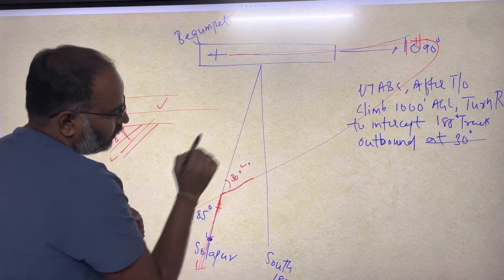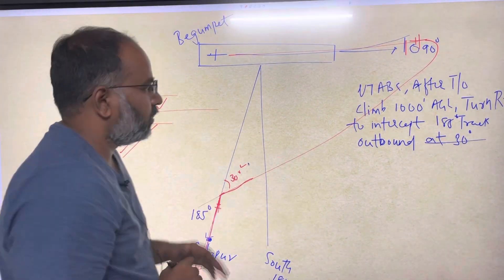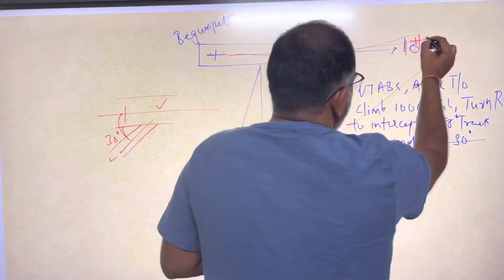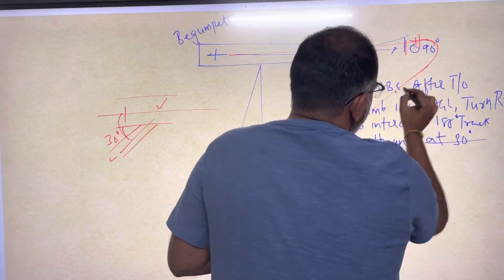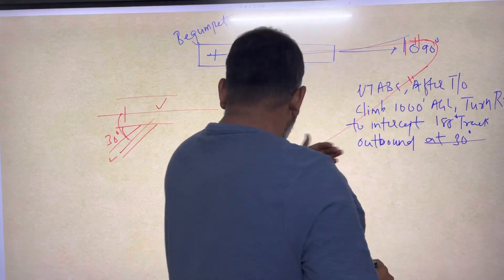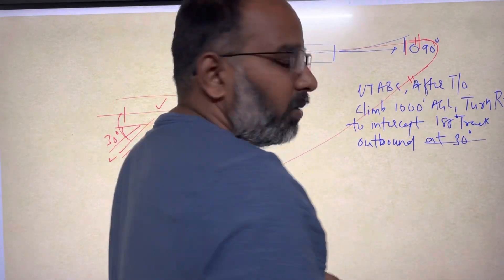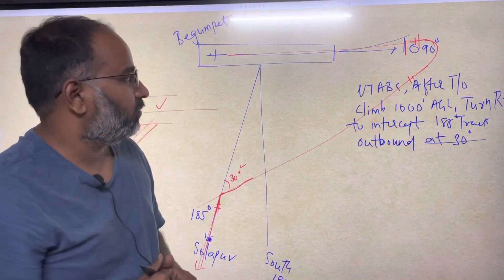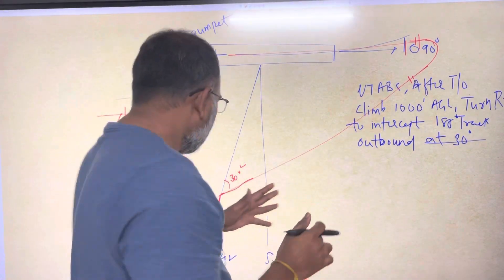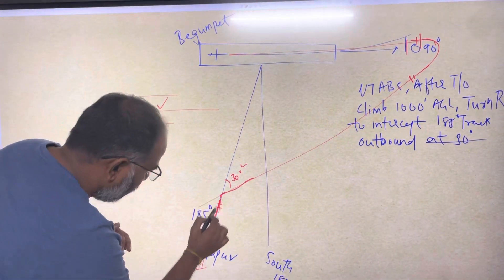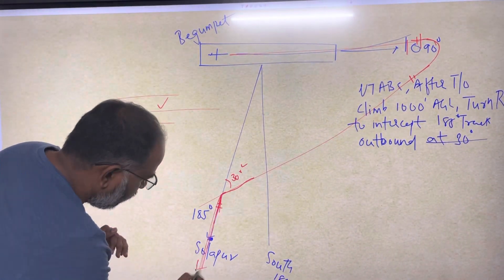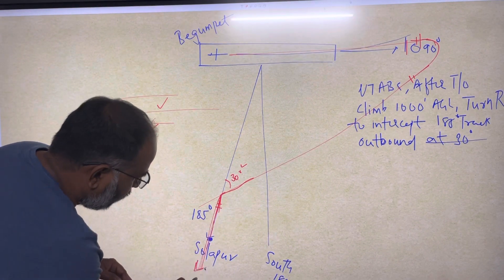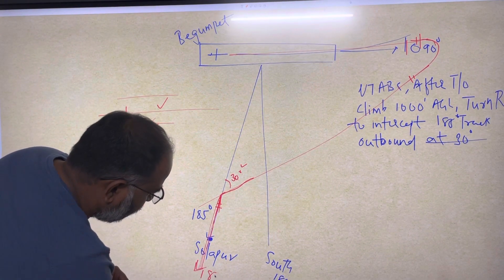Now the question is: from 090 degrees, which heading do I have to turn to be able to intercept this track to Solapur? Very simple. Solapur is here — if you are going to Solapur you are on a heading of 185 degrees.